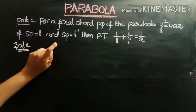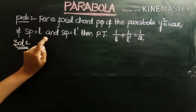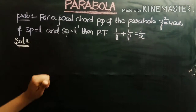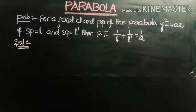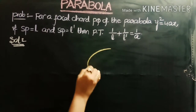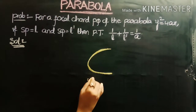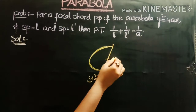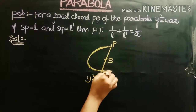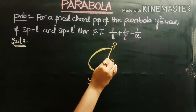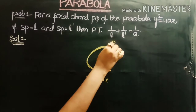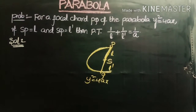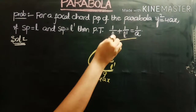First problem: for a focal chord PQ of the parabola y² = 4ax, if SP equals L and SQ equals L', then prove that 1/L + 1/L' = 1/a. Given that PQ is a focal chord of the parabola y² = 4ax, SP = L and SQ = L', we want to show that 1/L + 1/L' = 1/a.